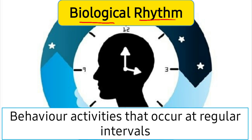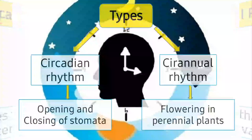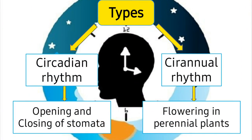Similarly, internally, we have our heart's beating, which occurs at regular intervals and is not interrupted unless there is a huge upset. These kinds of activities which happen at regular intervals are called biological rhythms. Biological rhythms appear in two different types.